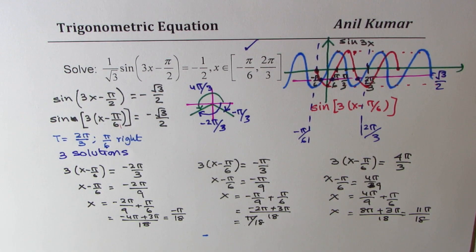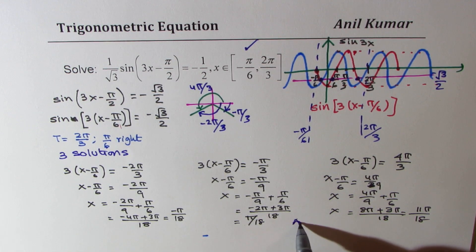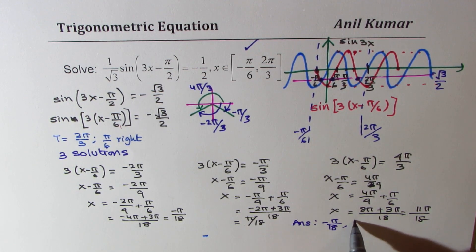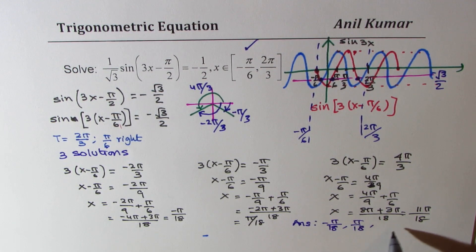So these are the three solutions in the given interval. It's kind of tricky, but that's probably the best way of solving. We get three answers: minus pi by 18, pi by 18, and 11 pi by 18.